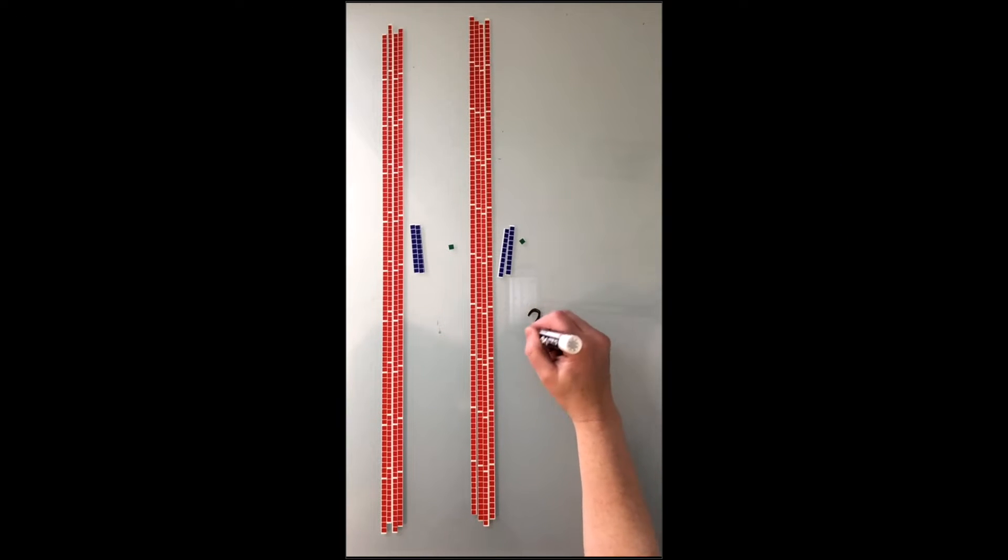April asked me to model two times 421. In order to do this, we need to use the Basic Ops Kit. Our model will be two across, 421 up.